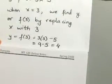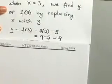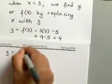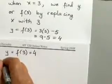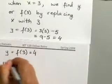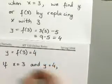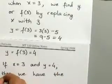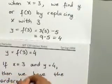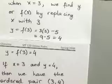So basically, you have y equals f of 3, which equals 4. Even though we're using function notation, it's still all the same thing. If x equals 3 and y equals 4, then you have the ordered pair — and that's how we would write it — your ordered pair as x, y: you have 3, 4.